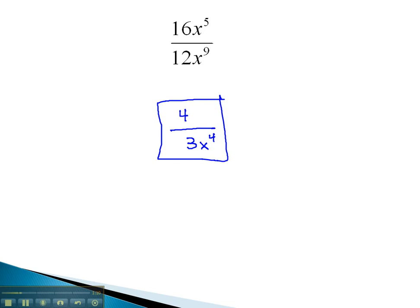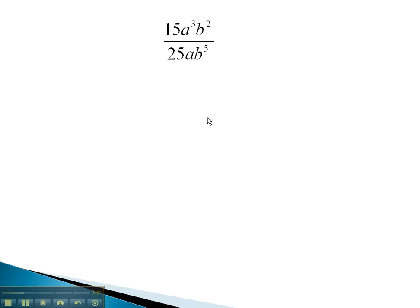Let's take a look at another example. In this problem, we can reduce the numbers like always. Both 15 and 25 have a common factor of 5, so when we divide out that common factor, we're left with 3 and 5.